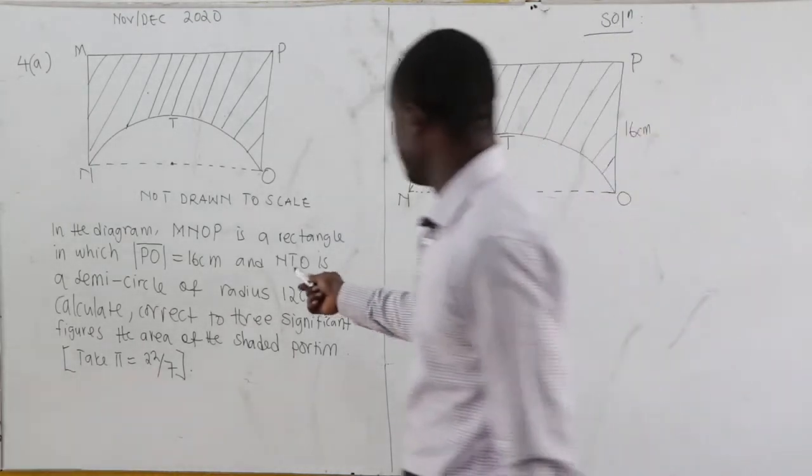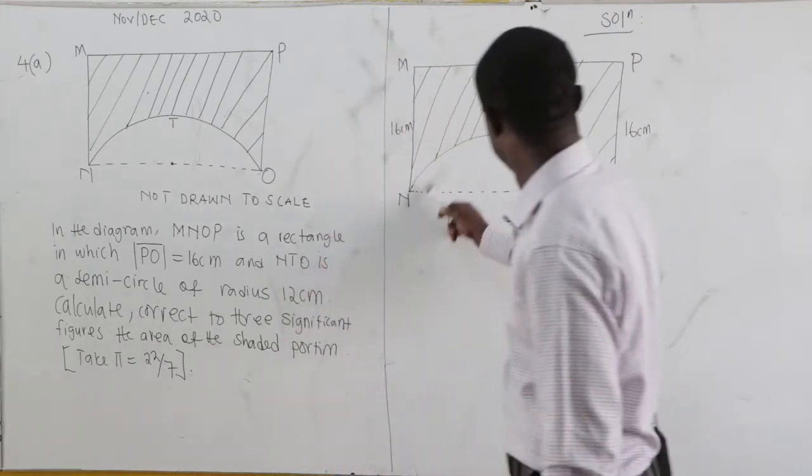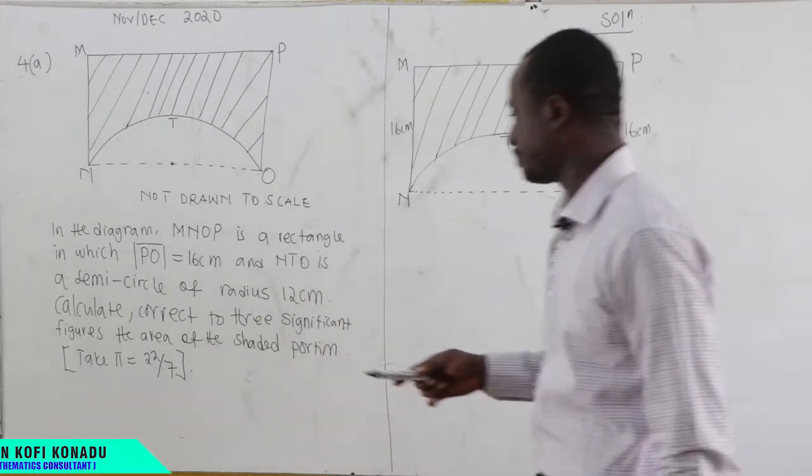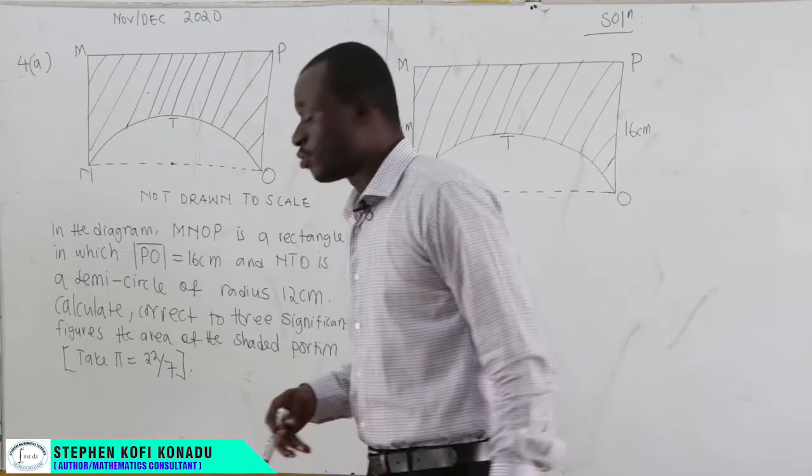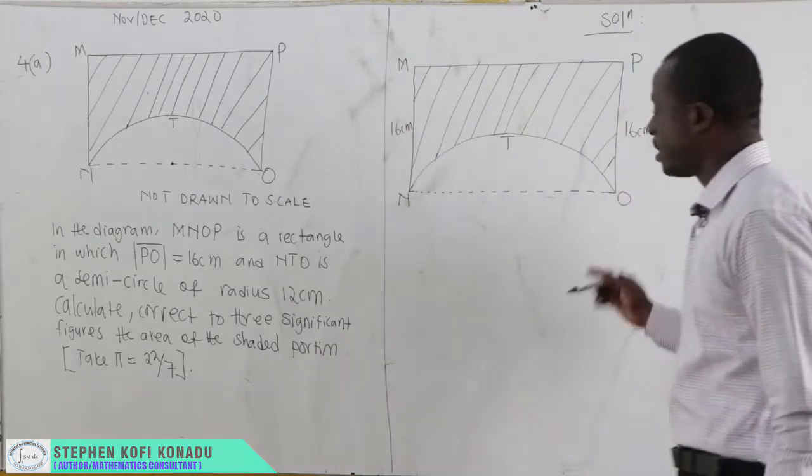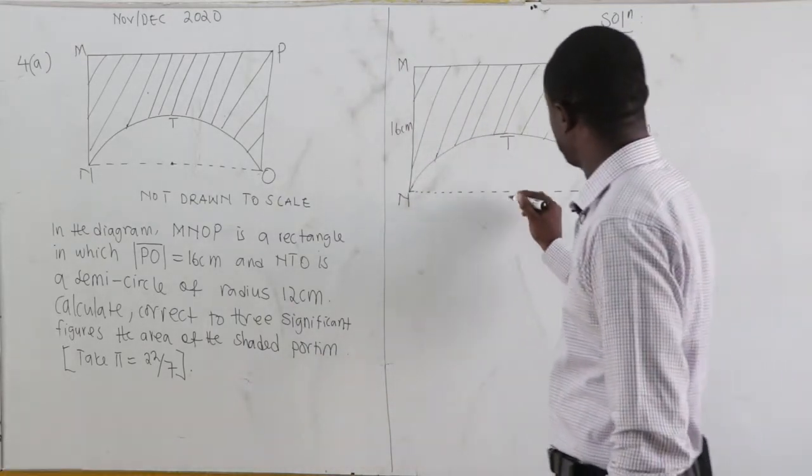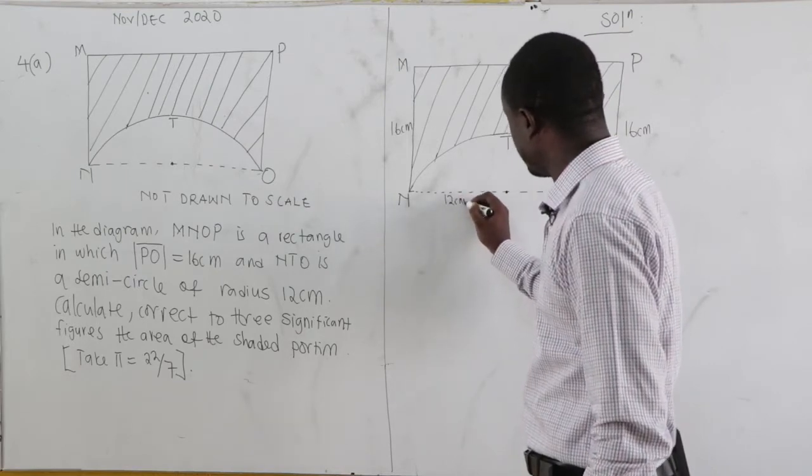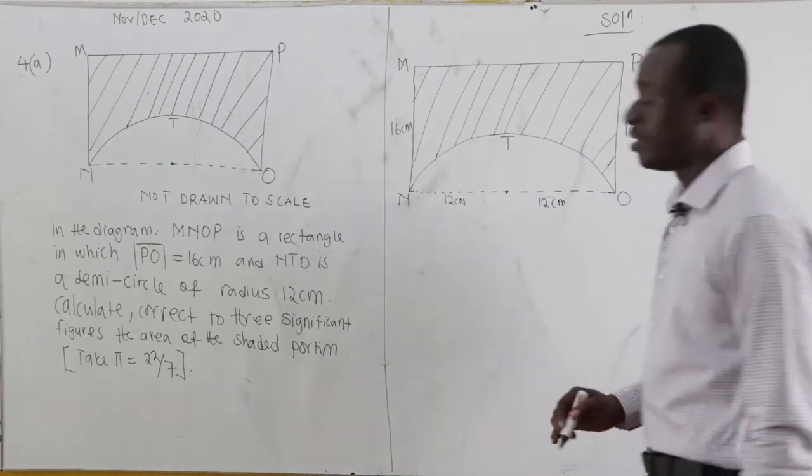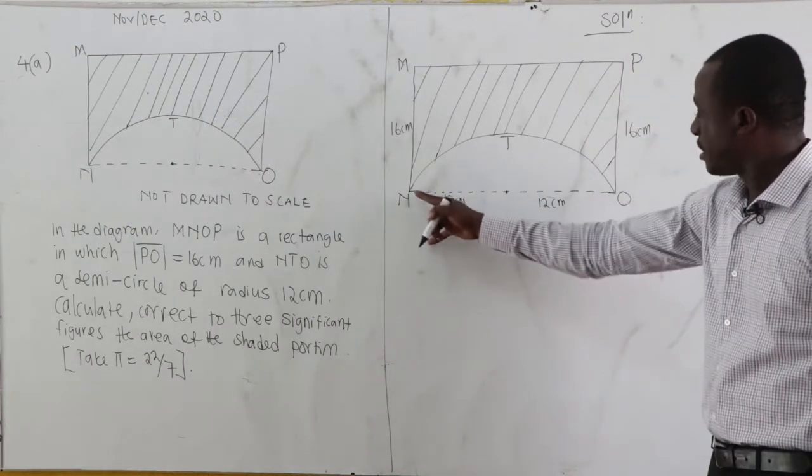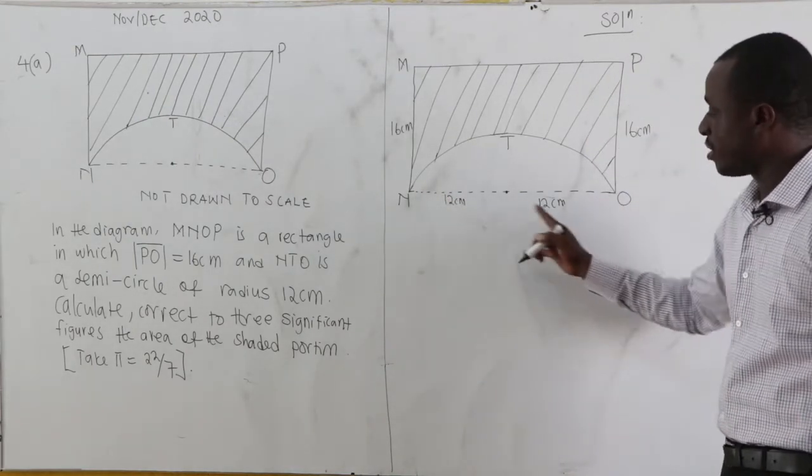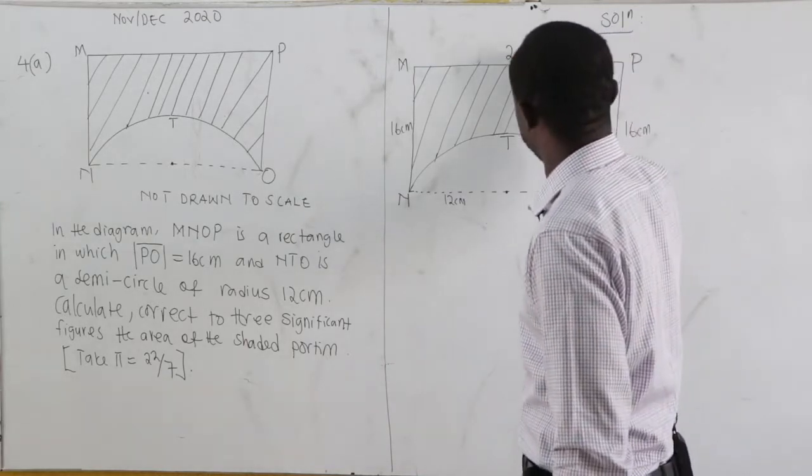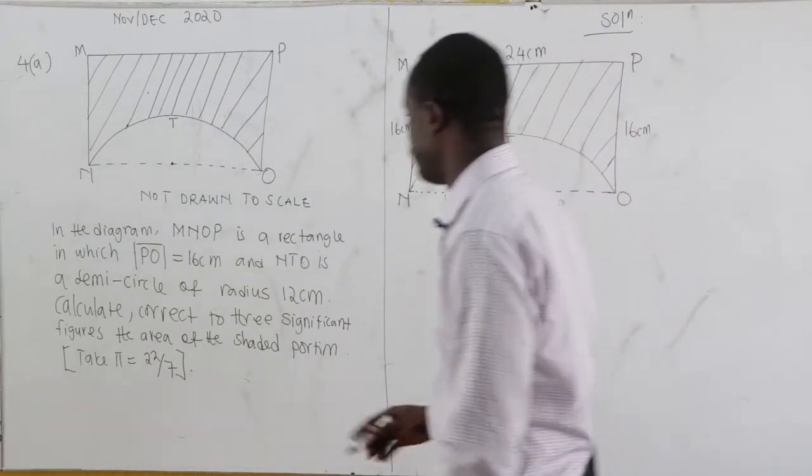And then NTO is a semicircle of radius 12 cm. So NTO, that's a semicircle and the radius is 12 cm. So if the center is here, this is 12 cm, this side is 12 cm. Hence, NO is 12 plus 12, which is 24 cm.